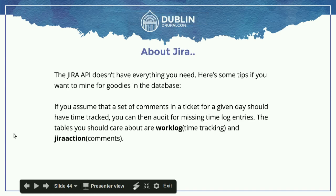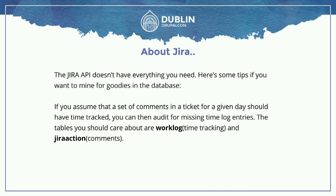Let's talk a little bit about Jira. I use and abuse the Jira API and do all kinds of crazy stuff — talk to me after if you're interested. It doesn't have everything you need. So if you want to mine for some interesting goodies in the database, there's some stuff you should know. If you wanted to do matching of comments in an issue with time tracking, you need to look at two tables: the worklog table (that's the time tracking table) and the jiraaction table (where comments are stored). If you can match worklog entries to the issue for a given day but there are comments in jiraaction with no items in the worklog, you know they need to track time.